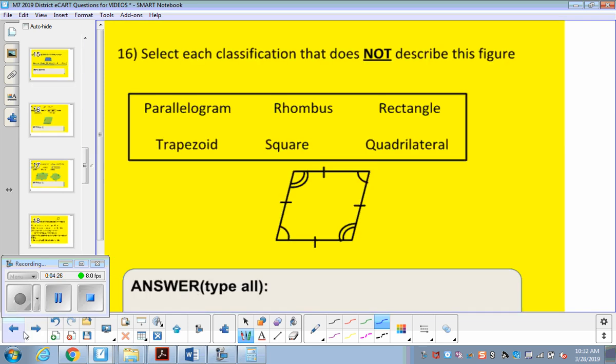And now we have one final question for this video. This is select each classification that does not describe the figure. So this is a quadrilateral and the opposite sides are parallel and the opposite sides are all congruent to each other. Okay. So that means this one is not a trapezoid, it's not a square, and it's not a rectangle because we don't have the right angles. And that concludes the video on quadrilaterals. Thank you.